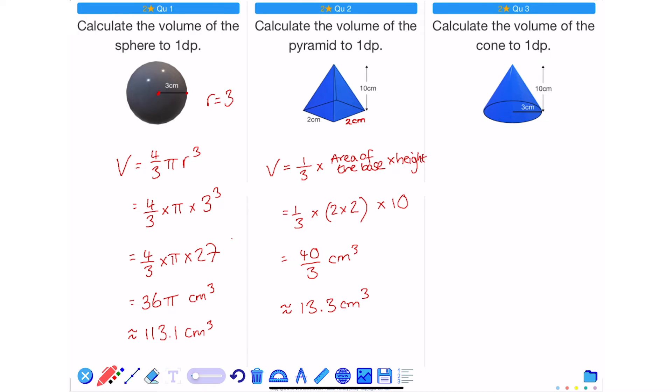So like with the previous question, what I need to do to calculate the volume is a third of the area of the base. Now the area of the base is a circle. So the formula for the area of a circle is pi r squared. And then I times it by the height.